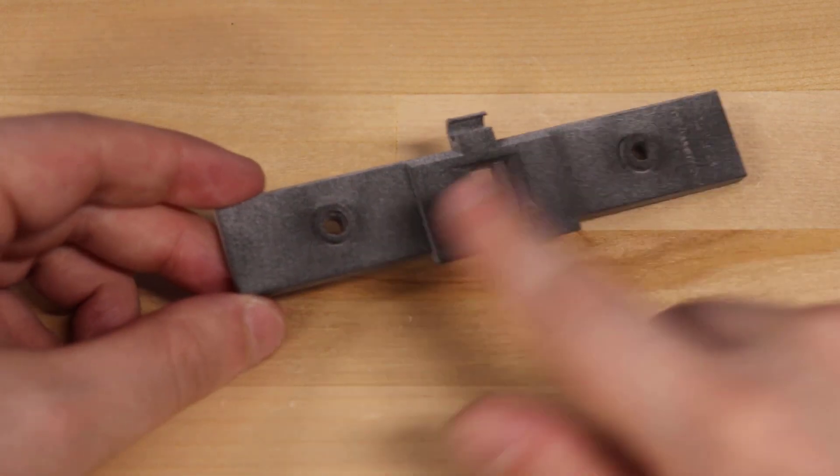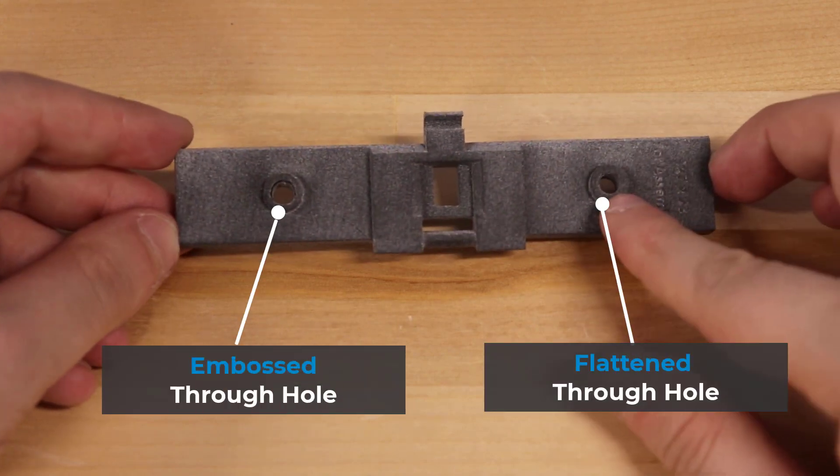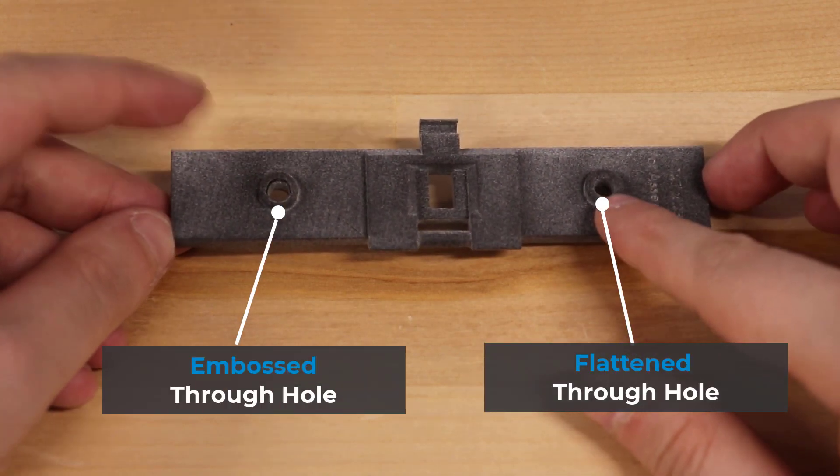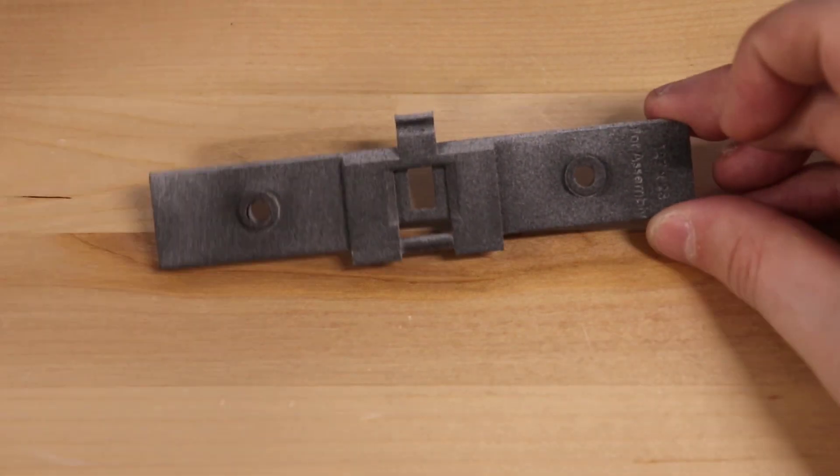You will want to also ensure that the feature that has the hole in it is thick enough for the full length of the heated insert. If it's too small, you'll possibly push through the part and have no adhesion to the heated insert.